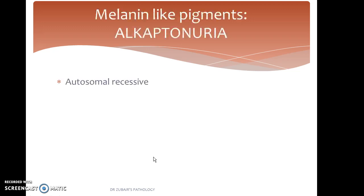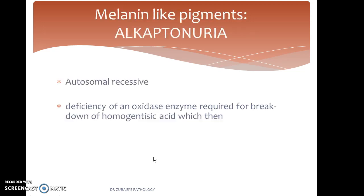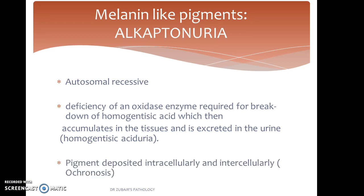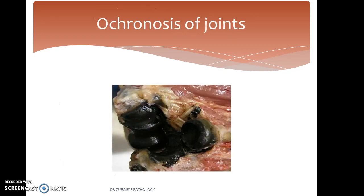Coming to melanin-like pigments: Alkaptonuria is an autosomal recessive disorder due to deficiency of an oxidase enzyme required for breakdown of homogentisic acid. This accumulates in the tissue and is excreted in the urine as homogentisic acid. The pigment is deposited intracellularly and intercellularly and the condition is also known as ochronosis. You can appreciate the pigment here, and this condition can give you a cola-colored urine.